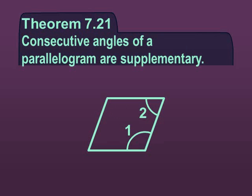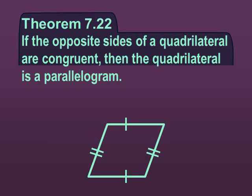Consecutive angles of a parallelogram are supplementary. So just to refresh your memory, supplementary means that the angles add up to 180. So if I add angles one and two together, they will equal 180. The opposite sides of a quadrilateral are congruent, then the quadrilateral is a parallelogram. So if I already can prove congruency of the sides, then I can prove it's a parallelogram.